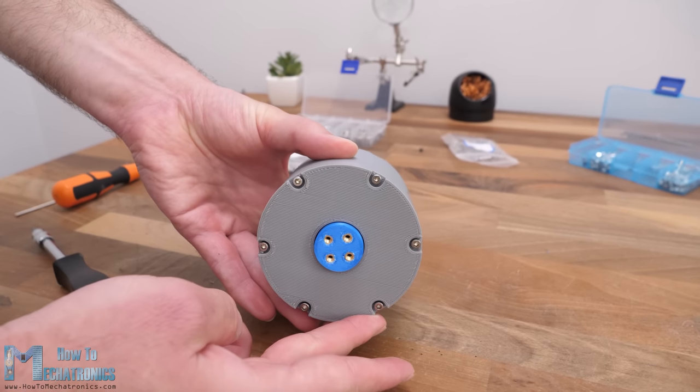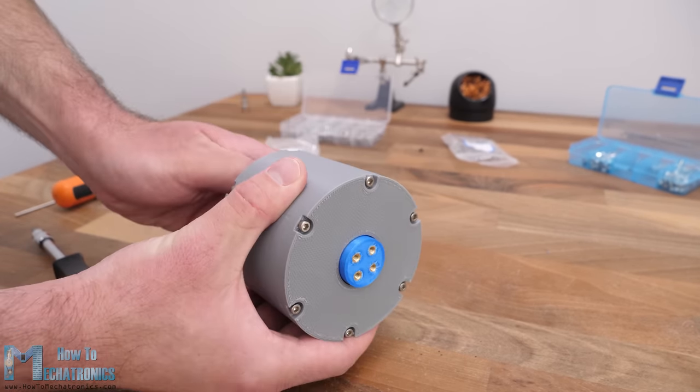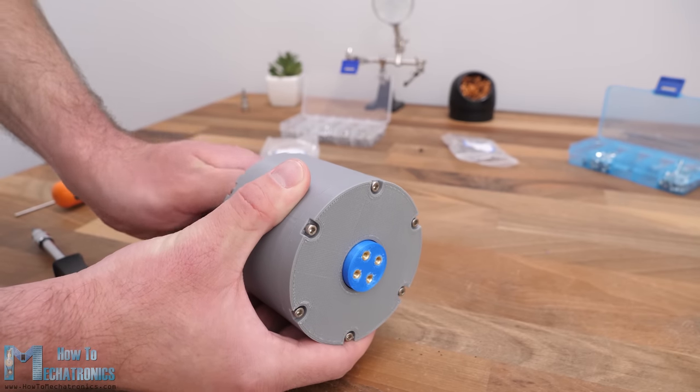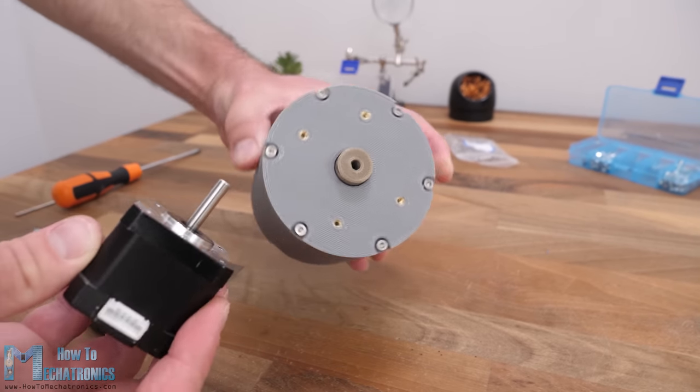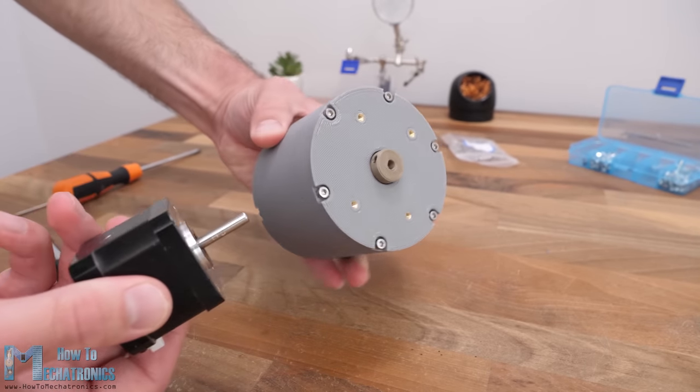And that's it. Our planetary gearbox is completed. I really like how clean the design came out. What's left now is to attach a motor to it, a NEMA 17 stepper in this case.